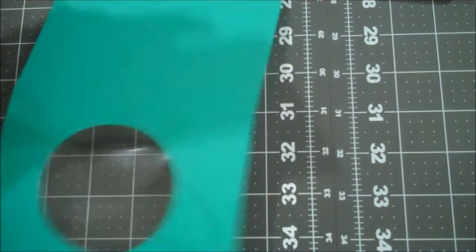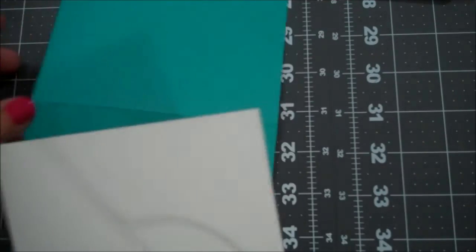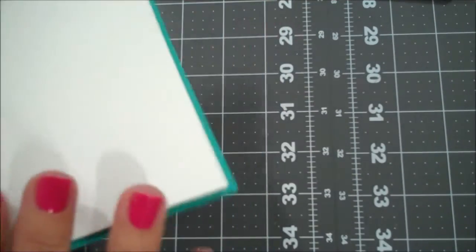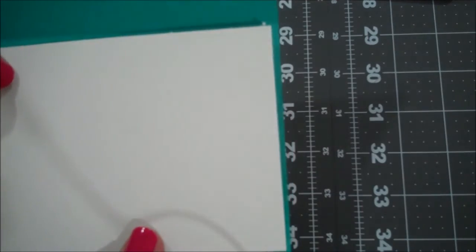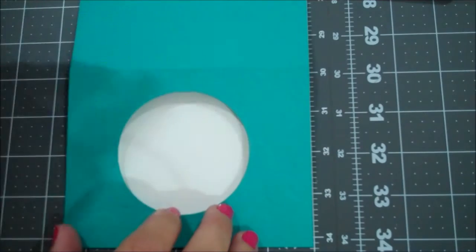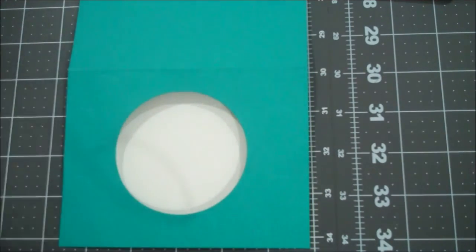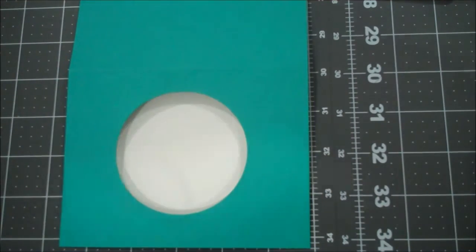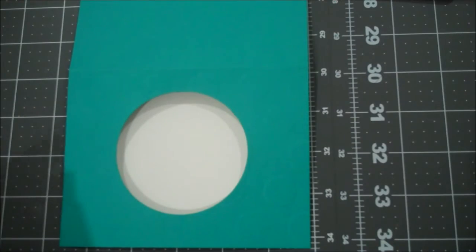And then what we're going to do is we're going to actually use a piece of whisper white that I've trimmed a little smaller than the front of our card. And I'm going to stamp our sentiment on that white piece so that it shows through the window. So we're going to make that fun.